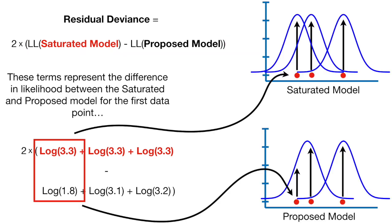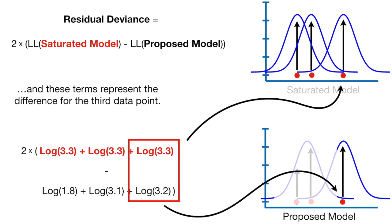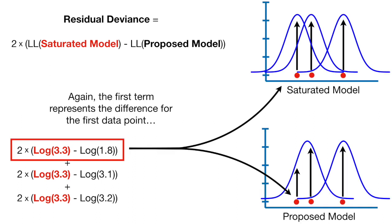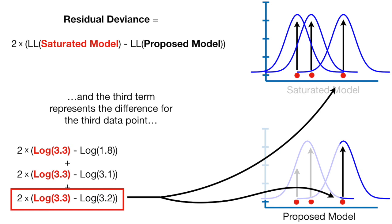These terms represent the difference in likelihood between the saturated and proposed model for the first data point. These terms represent the difference for the second data point, and these terms represent the difference for the third data point. We can rearrange the equation for residual deviance to reflect the difference in likelihoods for the individual data points. The first term represents the difference for the first data point, the second term for the second data point, and the third term for the third data point.